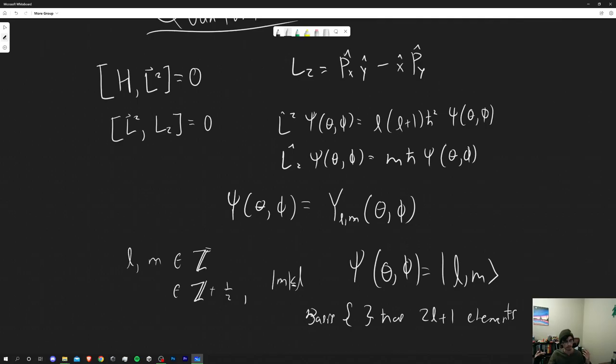Which has two L plus one elements which means that the LZ operator and all the other operators can be written out in terms of matrices and there's your representation theory and then there's a whole bunch of other stuff that goes into quantum mechanics that you can study in terms of abstract algebra and its extensions that's all we'll cover for today. I hope you enjoyed it I hope you see you in the next lecture have a good day.